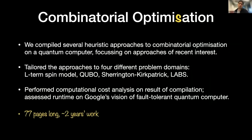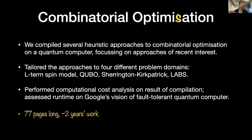Just to give a sense of what we're talking about: that first paper is about combinatorial optimization — and because I'm Australian-Canadian and we're in Australia, I'm using the correct spelling. The one-slide summary is that we compiled several heuristic approaches to combinatorial optimization on a quantum computer, focused on approaches of recent interest. We weren't trying to be exhaustive; we were focused on those seen as interesting nowadays for using a quantum computer to do heuristic optimization methods.